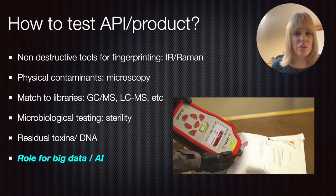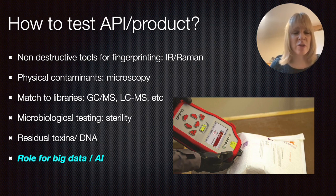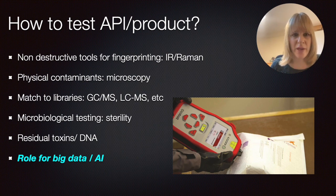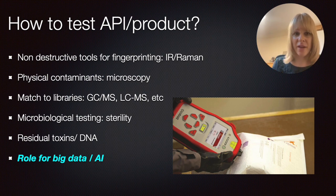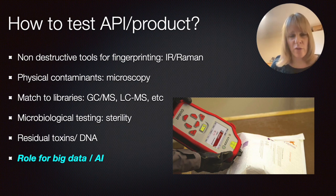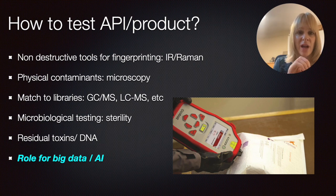To test the safety of the API in the product, there's a range of methods available — discussed further in the video on sensors for bioreactors. For instance, if you're working with tablets or powders, you might want to consider non-destructive tools, which are typically rapid and low cost, allowing very high throughput quality control. Examples include infrared spectroscopy and Raman spectroscopy — by fingerprinting the spectrum you can identify the API and quantify how much is present. You can also employ microscopy in case there are physical contaminants or particulates. Mass spectrometry and gas chromatography can match compounds against a library, but these are destructive tools, so you can't use them as routinely.